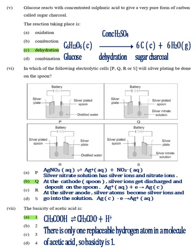Part 5, Answer C, Dehydration. Glucose on dehydration gives sugar charcoal. Part 6, Answer B, Q. Silver nitrate solution has silver ions and nitrate ions. At the cathode, i.e. spoon, silver ions get discharged and deposit on the spoon. At the silver anode, silver atoms become silver ions and go into solution.